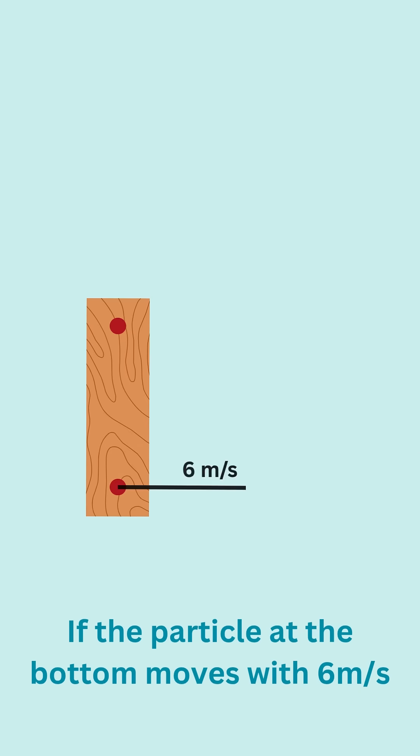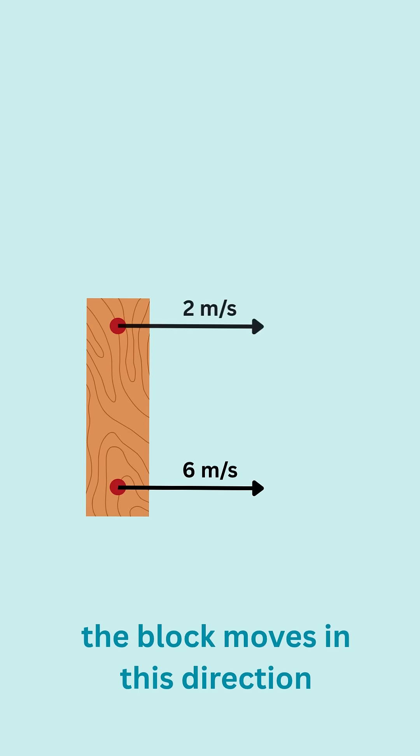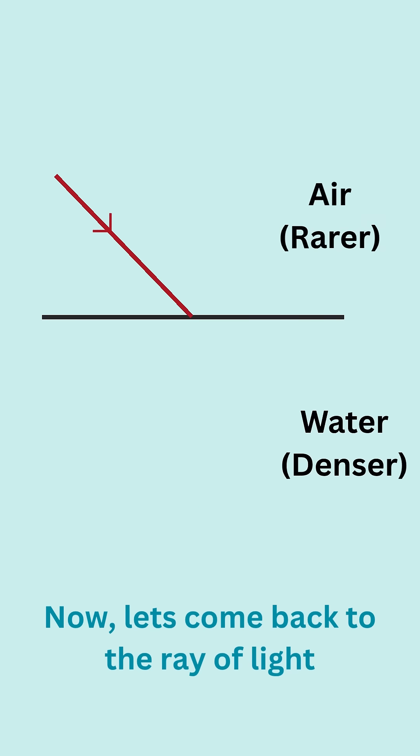And if the particle at the bottom moves with 6 meters per second and the particle at the top moves with 2 meters per second, the block moves in this direction. Now let's come back to the ray of light.